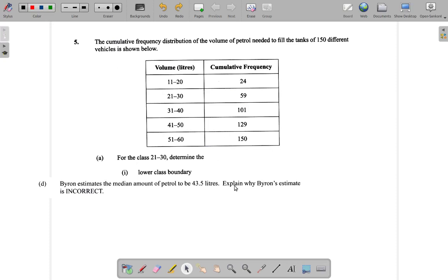Question 5D. It says, Byron estimates the median amount of petrol to be 43.5 liters. Explain why Byron's estimate is incorrect.